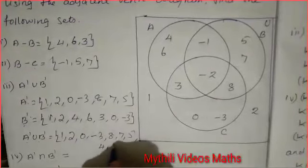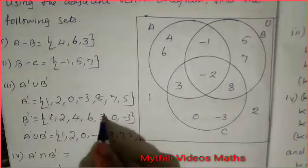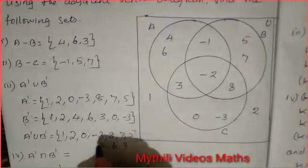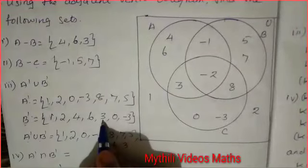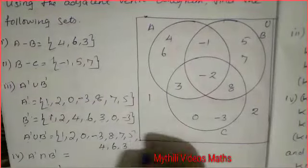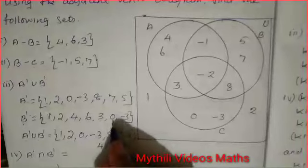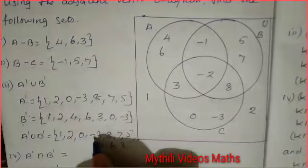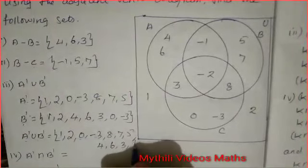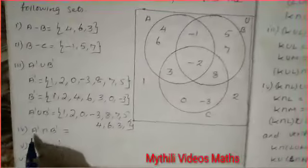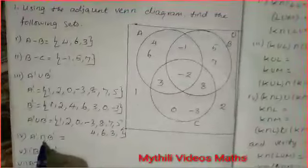Continuing the union: 3 and -3 are different elements, so we write 3 as well. But -3 is already written, so no need to repeat. The final answer for A' union B' is {1, 2, 0, -3, 8, 7, 5, 4, 6, 3}.